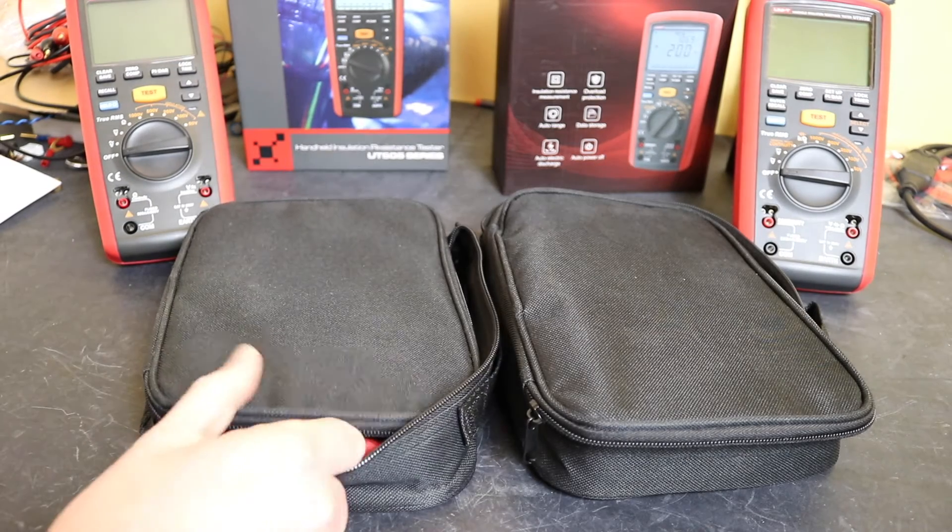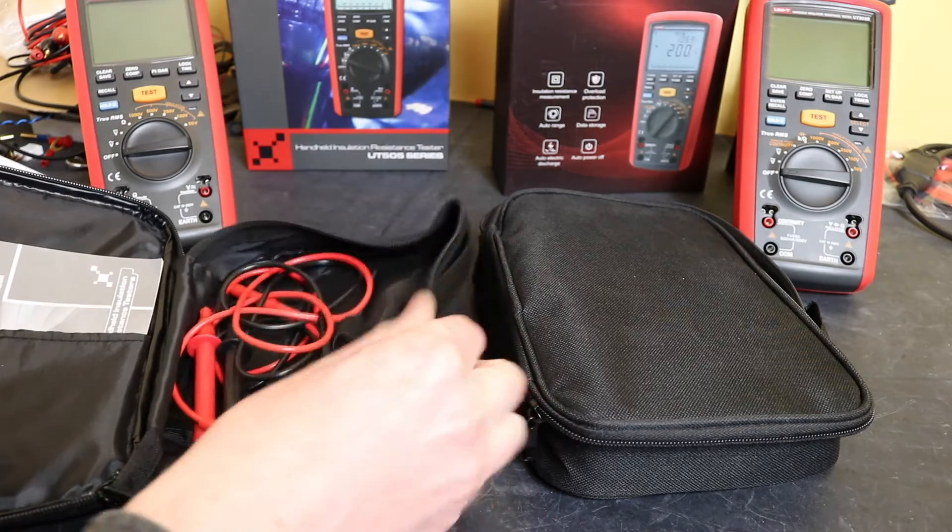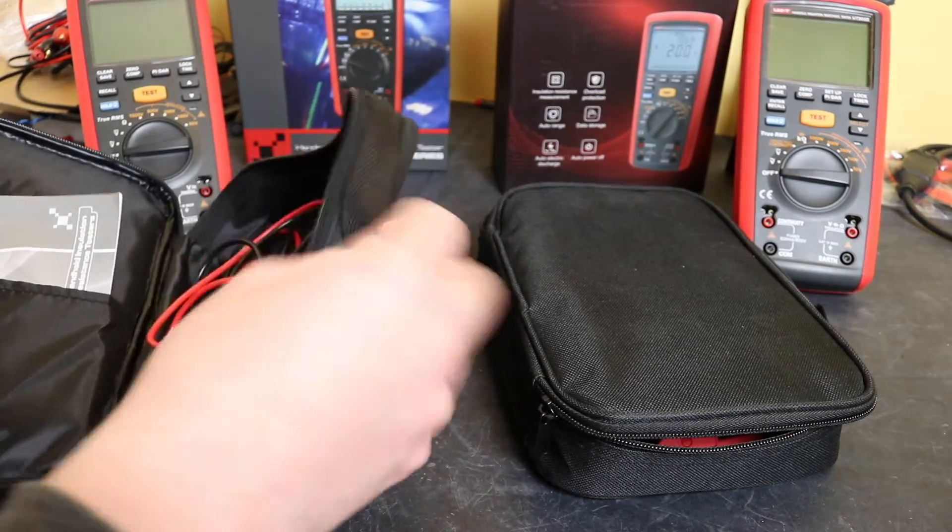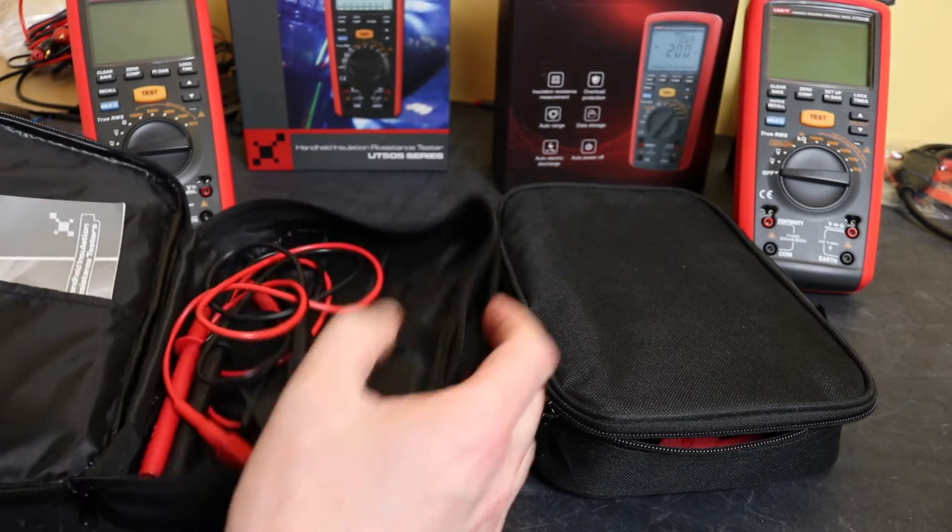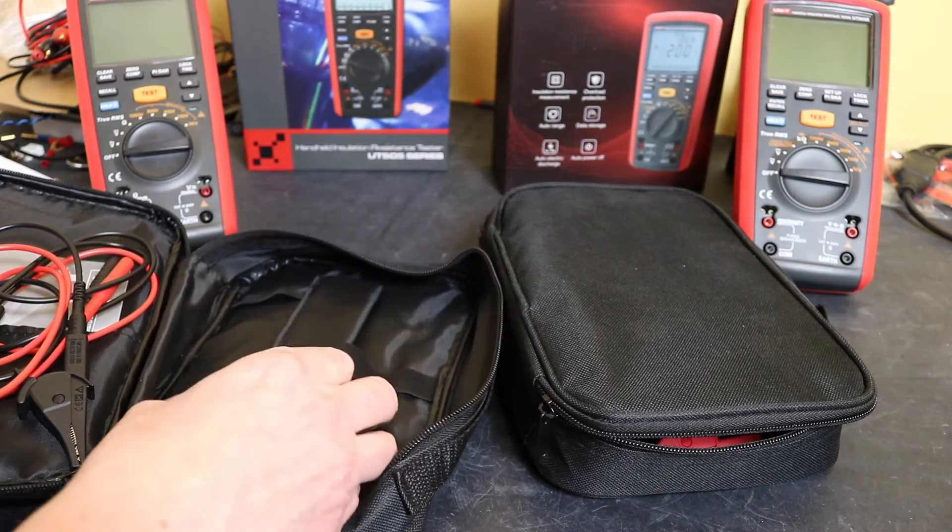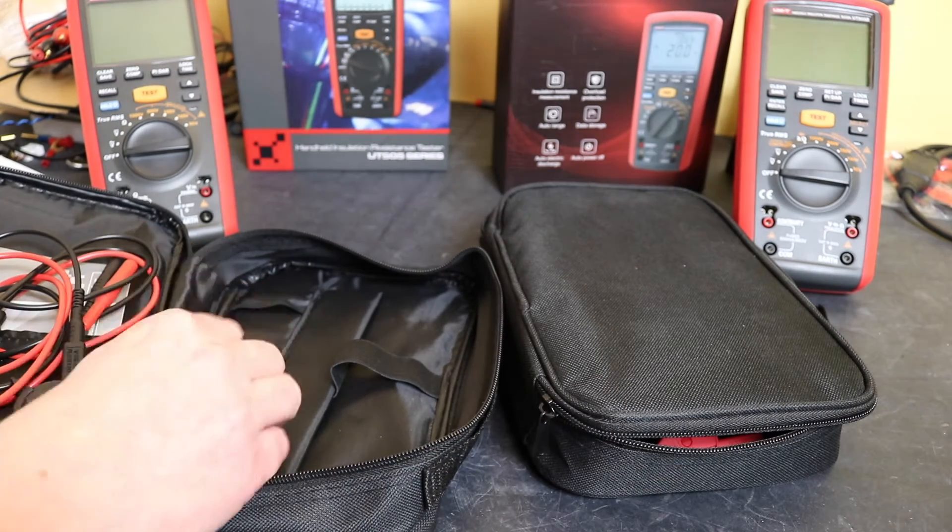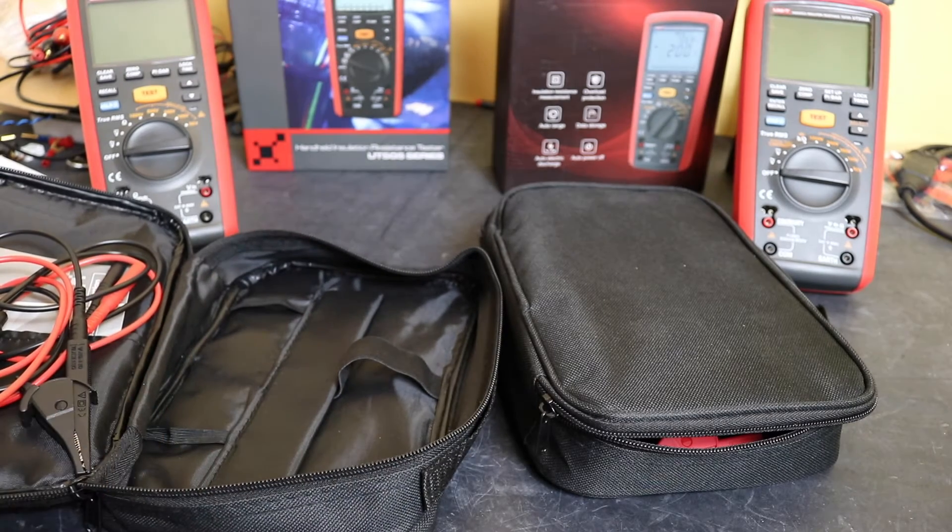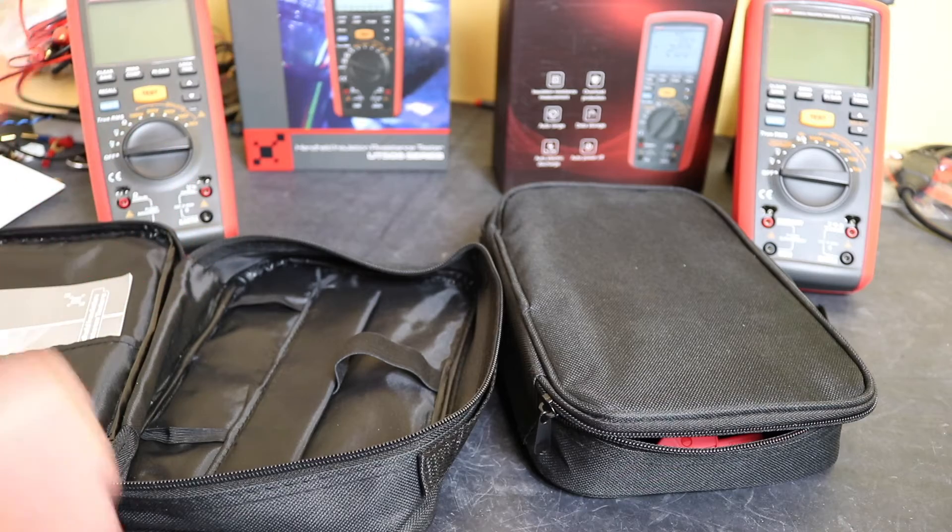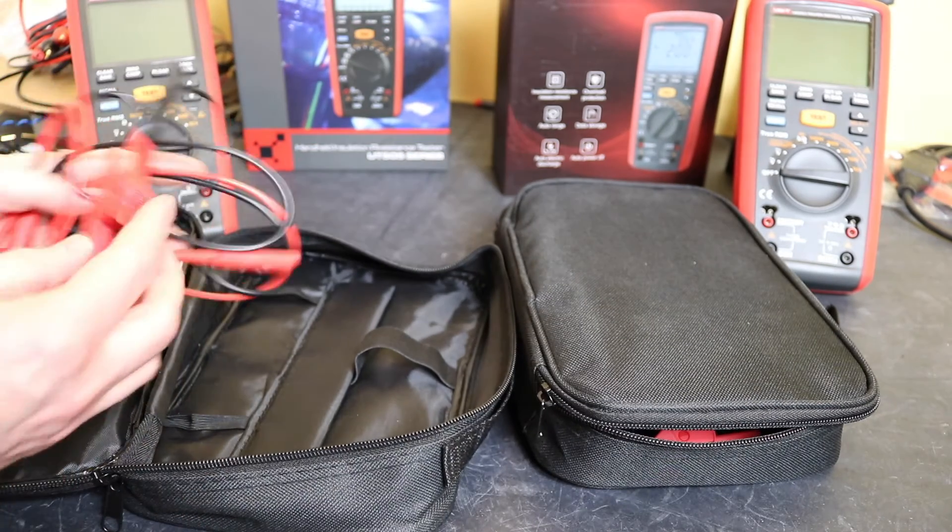What you get in each of the packages is this little canvas bag - identical bag, little zipper, bit of padding on the front and back, and then a little carry handle here on the side as well. The meter can be held in with elastic restraint there, and you've got a little divider for a compartment for the leads and two elastic straps to hold leads should you want to use them. Both the cases are identical, little single zipper to do them up with.